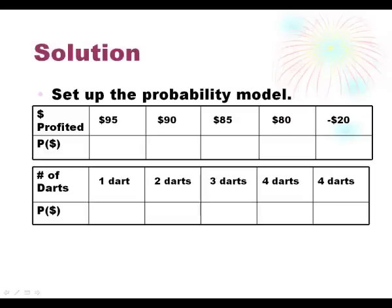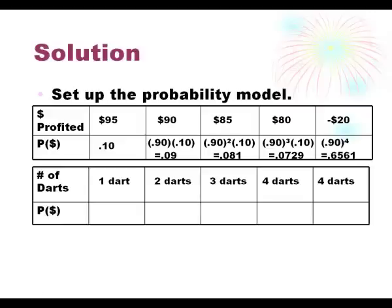Now let's look at the first one. If we hit the first dart there's a 10% chance of that happening. In the next scenario we missed the first one but we hit the second one. So that's .90 times .10 which is .09. In the third scenario we missed two and then we hit the third one. So that's .90 to the second times .10, which is .081. In the fourth scenario we missed the first three and hit the fourth one, which is .90 to the third times .10 or .0729. And then in the last scenario we missed all four of them which is .90 to the fourth or .6561.